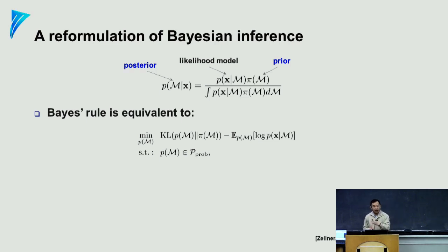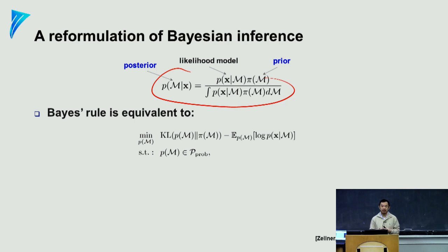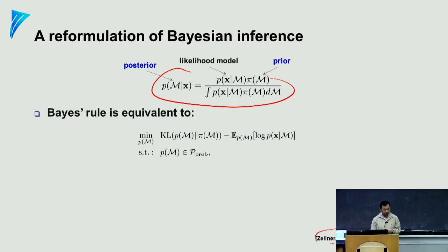Before moving on to other paradigms, let me close the Bayesian inference presentation with a new representation of Bayes' rule that is very important to open up your imagination. We always know the Bayes' theorem: posterior equals prior times likelihood, normalized by the data likelihood. But you can actually work out the math, as captured in this paper, that the same rule can be equally expressed in a different way.